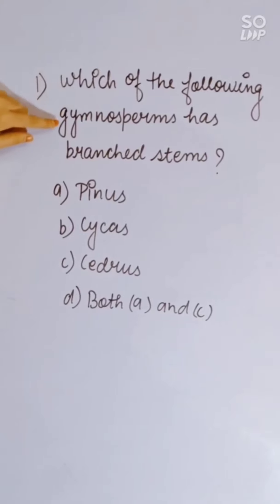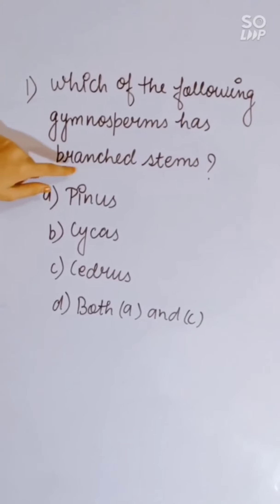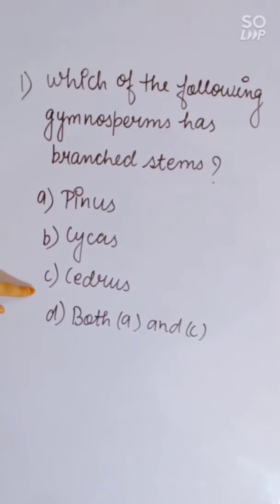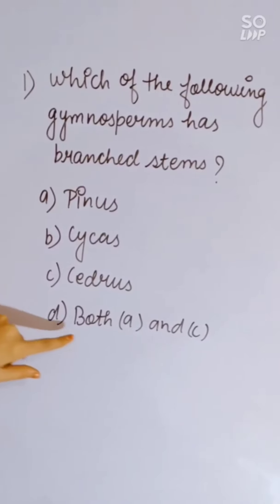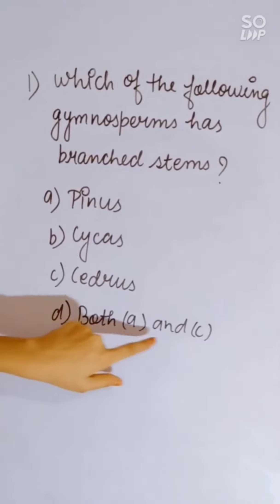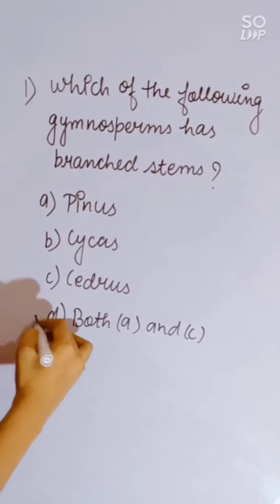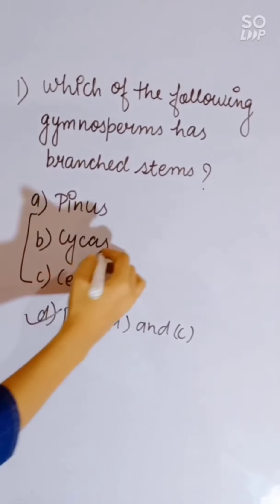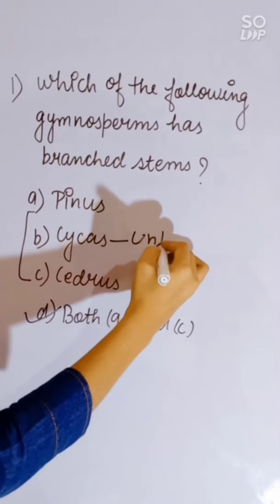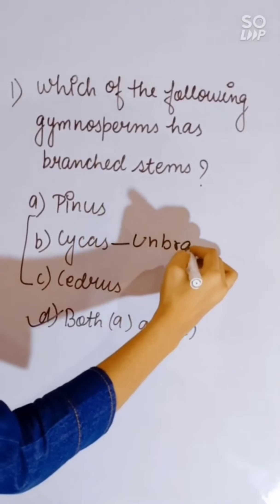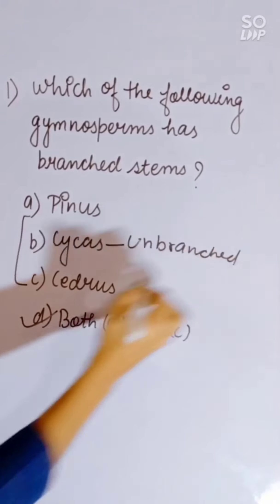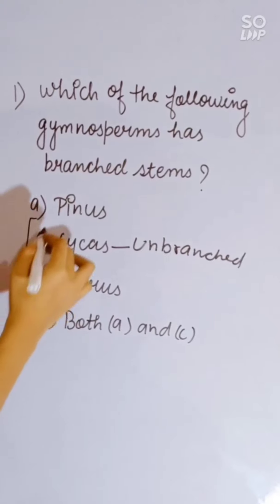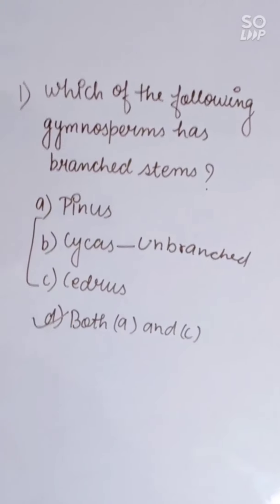Which gymnosperm form has a branched stem? Options: Pinus, Cycas, Cedrus, or both Pinus and Cedrus. Correct answer is Pinus and Cedrus — Cycas has an unbranched stem while Pinus and Cedrus have branched stems.